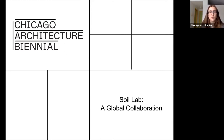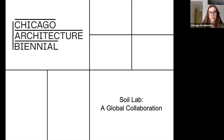Today's program is part of CAB's new model of free year-round programming. Programming held throughout 2021 is related to the year's edition theme of The Available City, which is led by Artistic Director David Brown. The Available City brings together local and international design thinkers with community stakeholders, residents, and students to chart new uses for design and architecture that respond to the existing city fabric.